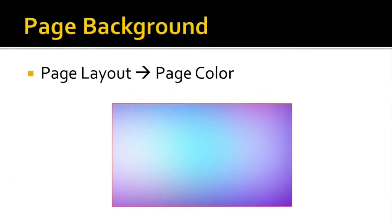You can change the page color by going to the Page Layout tab and from there selecting Page Color in the Page Background group. Here you can also add a watermark and various types of borders to the page.